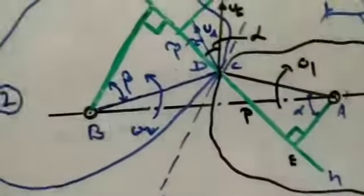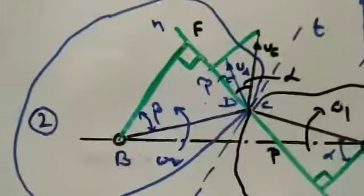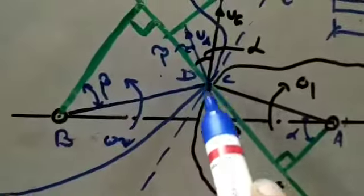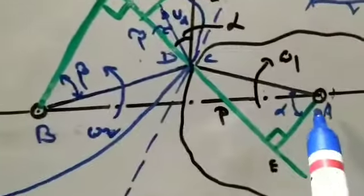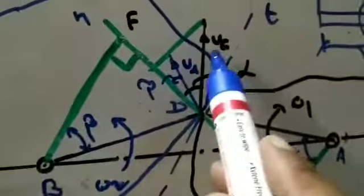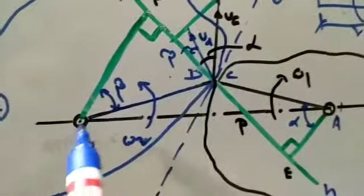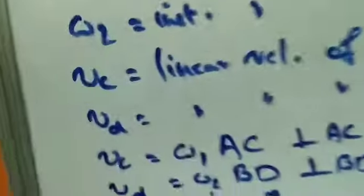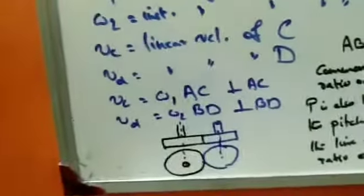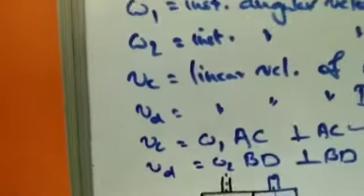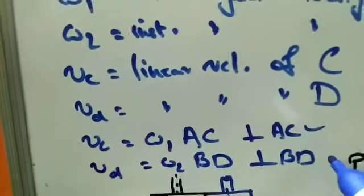The linear velocity of body 1 along AC is vc, perpendicular to AC. The linear velocity of body 2 along BD is vd. Therefore, vc = ω1 × AC, perpendicular to AC, and vd = ω2 × BD, perpendicular to BD.